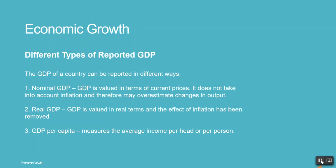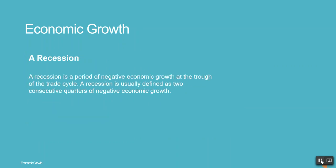3: GDP per capita measures the average income per head or per person. A recession is a period of negative economic growth. At the trough of the trade cycle, a recession is usually defined as two consecutive quarters of negative economic growth.